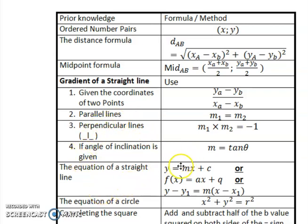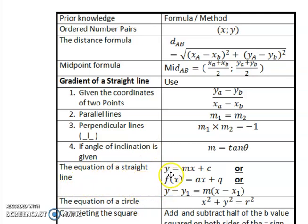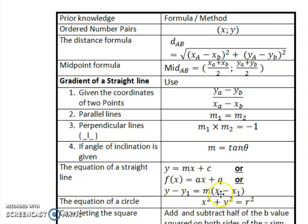Then, once I've got the gradient and I've got the coordinate, I can calculate the equation of a straight line. There are three different ways: most of you will be familiar with y = mx + c, or the function formula f(x) = ax + q, or y minus y₁ is equal to the gradient times x minus x₁.